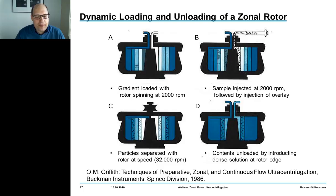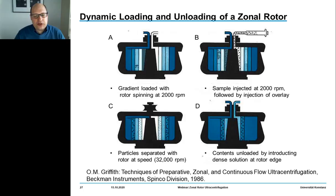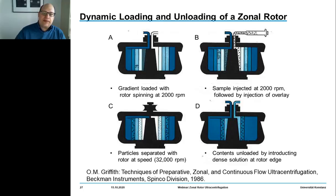Once the nanoparticles are properly banded into discrete zones for the different particle populations, we decelerate the rotor back to 2000 RPM, remount the two-way fluid seal, and harvest the zones of banded particles by pumping in a very dense solution of gradient material towards the rotor edge, displacing the zones of banded particles via the center line.